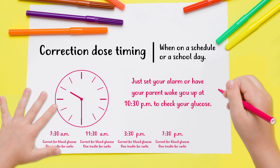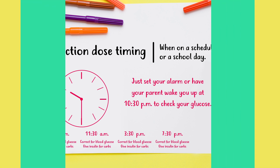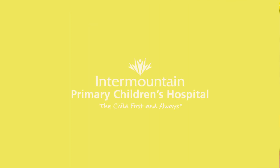To check your glucose, as this will be three hours from your last dose of fast-acting insulin. If your glucose is above your nighttime target when you check it at 10:30 p.m., give yourself a correction dose based on your bedtime correction.